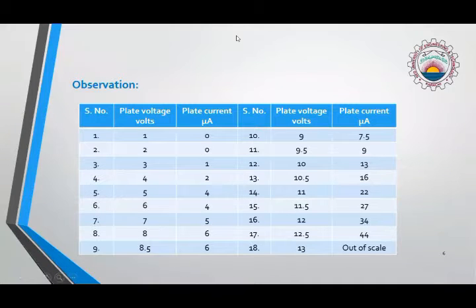Now this is the observation table. The observations have been recorded with the help of the experiment as shown in the previous part. Here you can see the plate voltage increases with 1 volt difference initially. Then near the ionization potential value, we are going to increase the values with 0.5 difference.